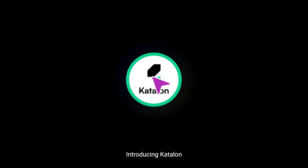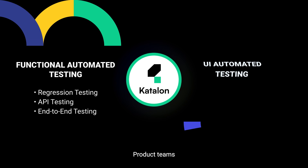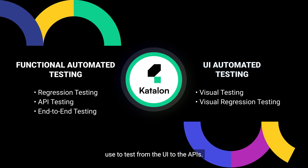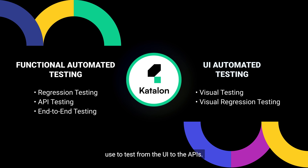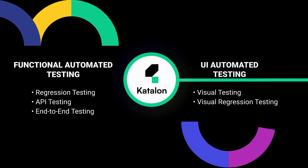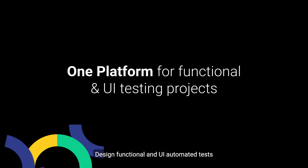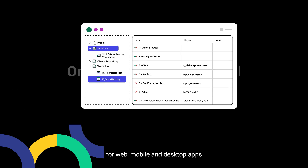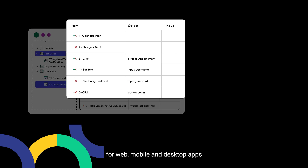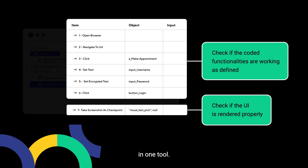Introducing Kanlon, the software-quality platform product teams use to test from the UI to the APIs. Design functional and UI-automated tests for web, mobile, and desktop apps in one tool.